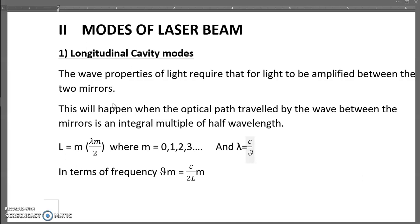There are two modes of laser beam: longitudinal wave mode and transverse mode. The wave properties of light require that light can be amplified between the two mirrors only if the optical path length travelled by the wave between the mirrors is an integral multiple of half the wavelength.